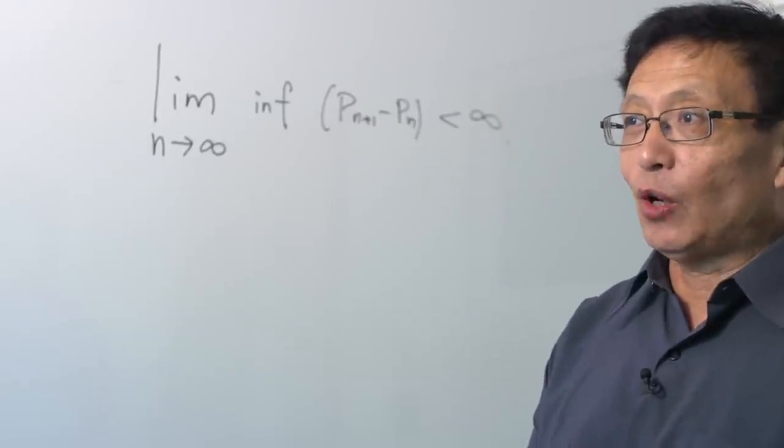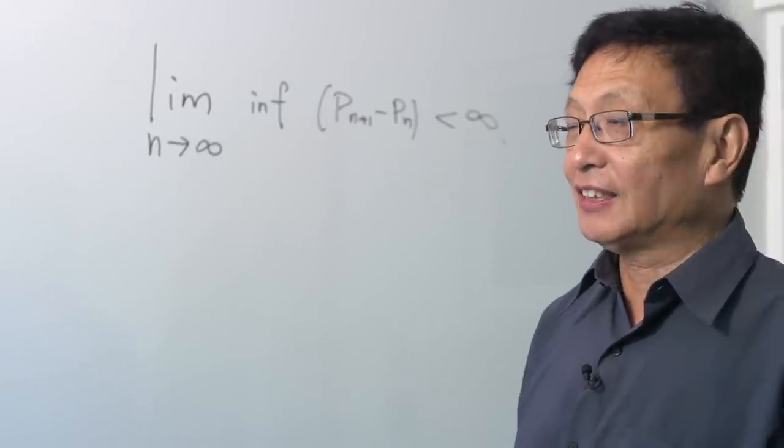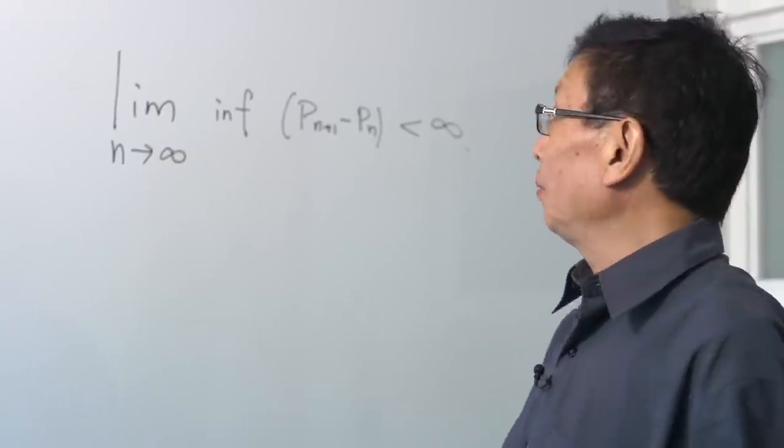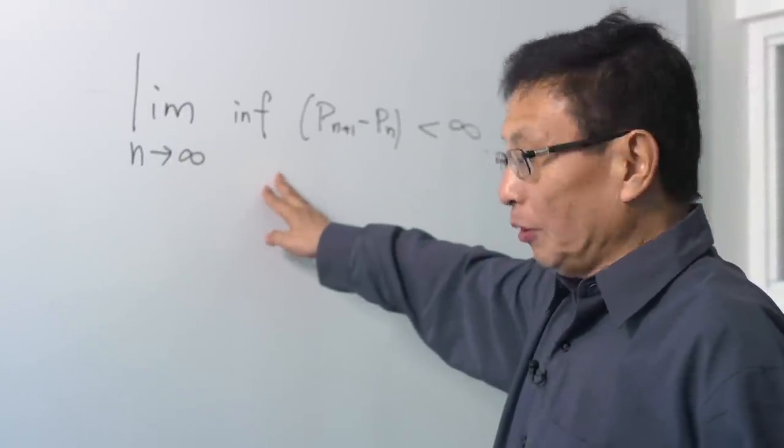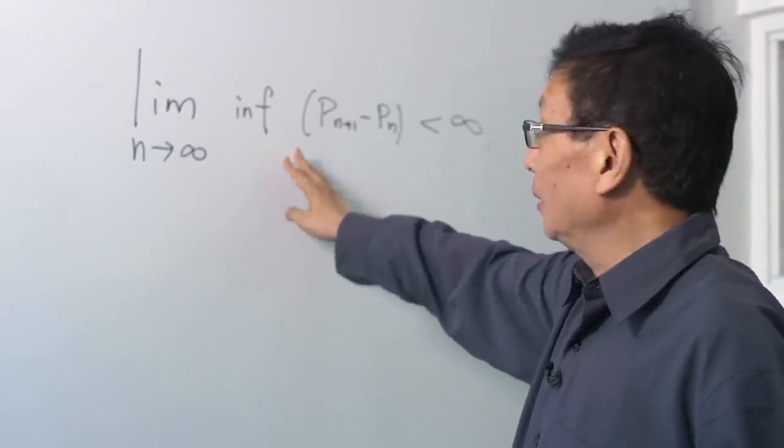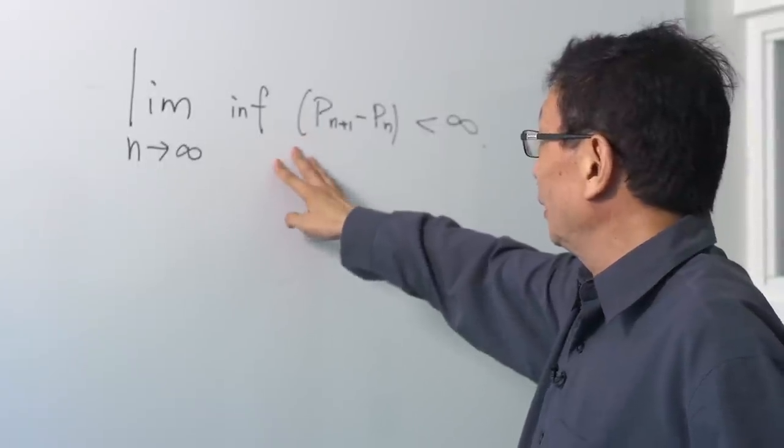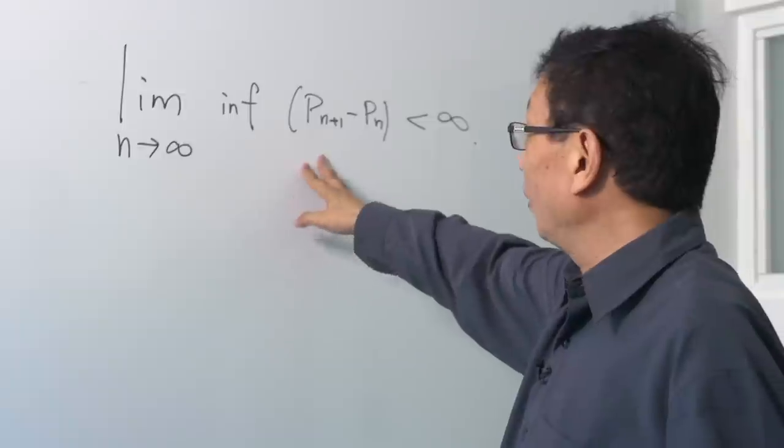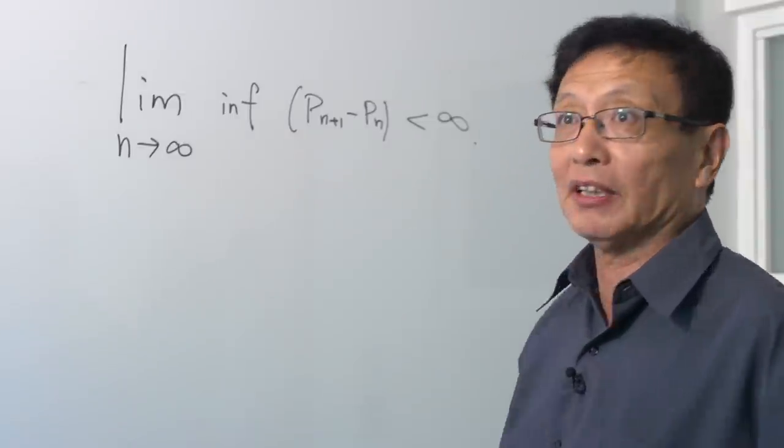It is a quality concerning the distribution of prime numbers. Before my discovery people didn't know if this quality is infinity or just a certain number. Now I found it is a certain number, not infinity.